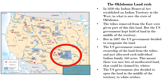In 1830, the Indian Removal Act established an Indian territory in the West, in what is now the state of Oklahoma. On my map you can see that inside the red circle. The tribes that were forcibly removed from the East were given part of this land, but the US government kept hold of land in the middle of the territory.